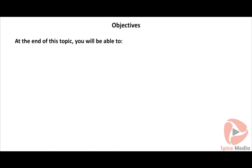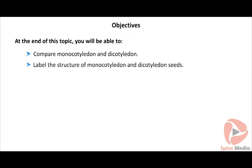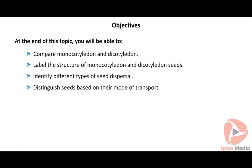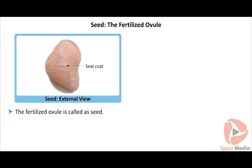At the end of this topic you will be able to compare monocotyledon and dicotyledon seeds, label the structure of monocotyledon and dicotyledon seeds, identify different types of seed dispersal, and distinguish seeds based on their mode of transport.